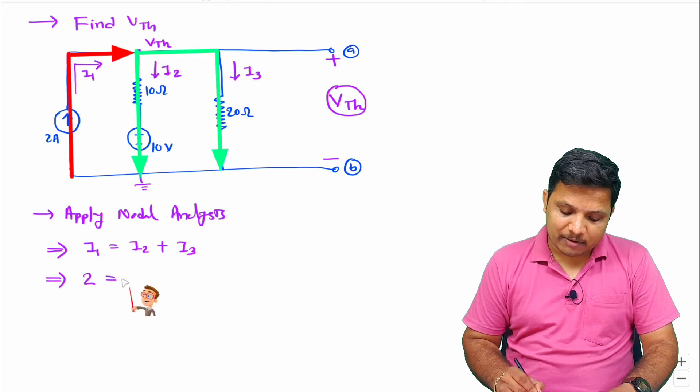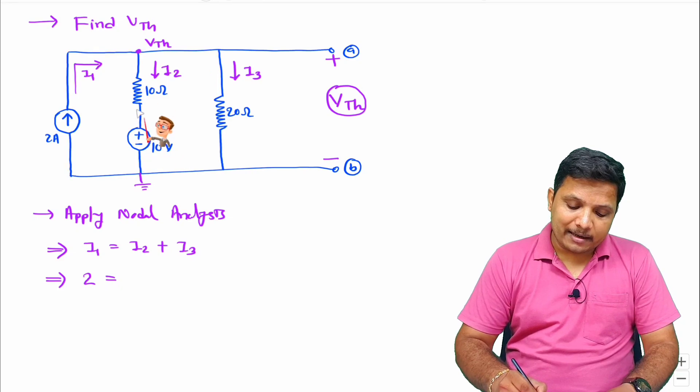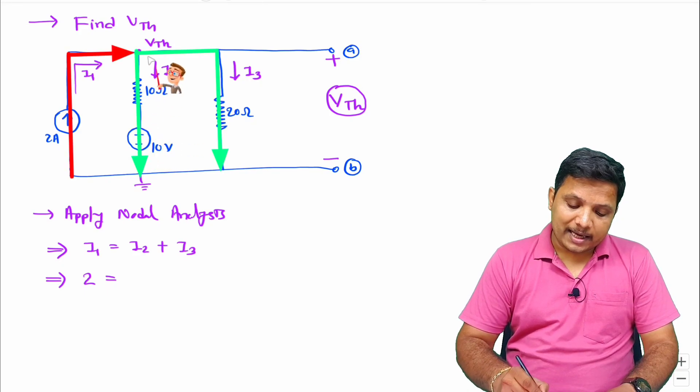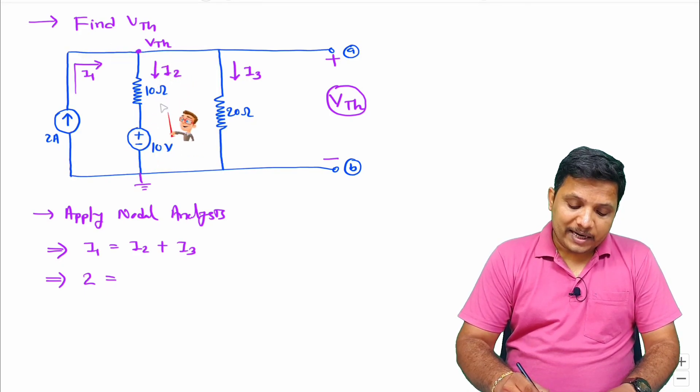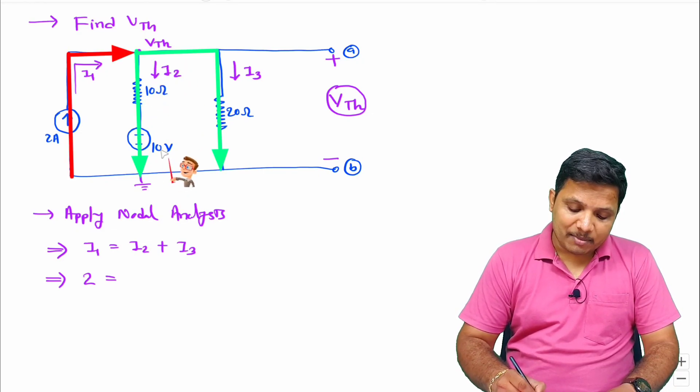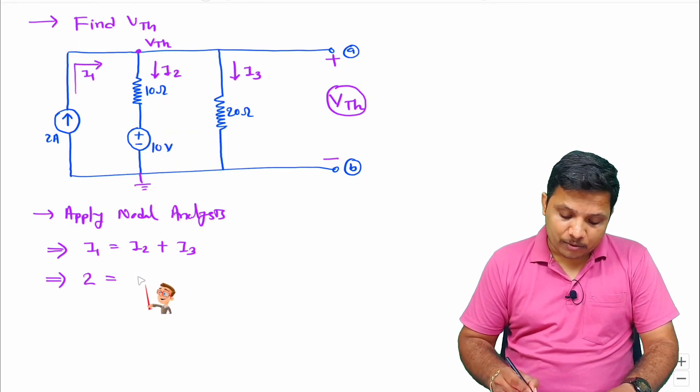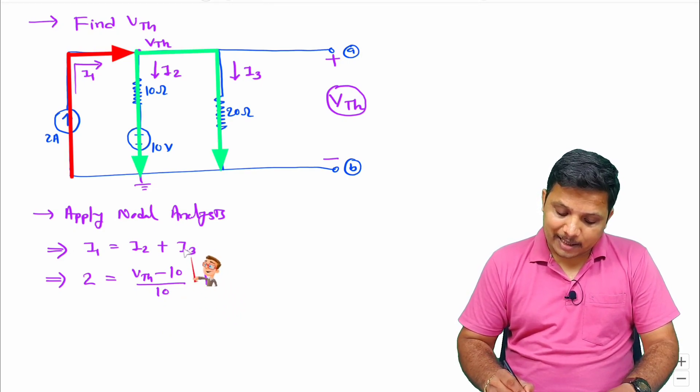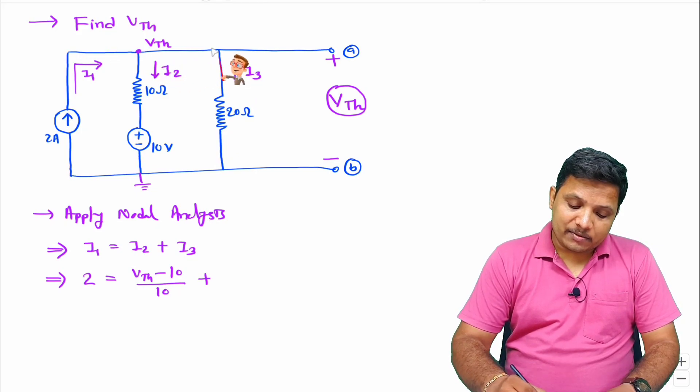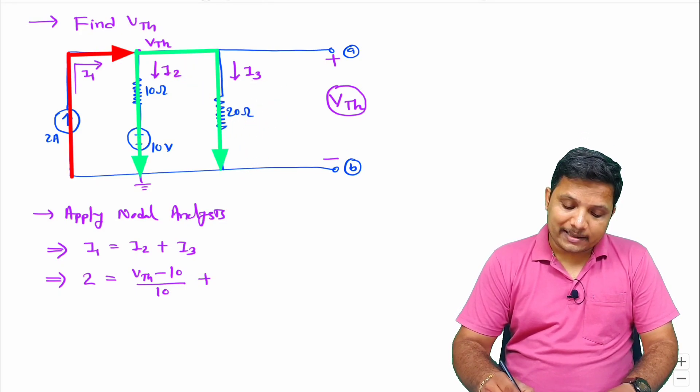So I1 is 2 and that equals now I2. So I2 is tail minus head - tail voltage is VTH and head voltage is plus 10 voltage. So I can say VTH minus 10 divided by resistance, that is I2. So VTH minus 10 divided by 10, that is I2 plus I3. Now you see I3 is happening in this direction, so tail is VTH voltage and head is ground. So VTH by 20, that is I3.